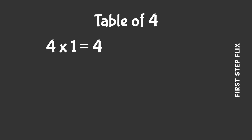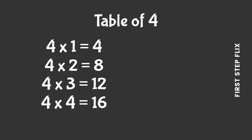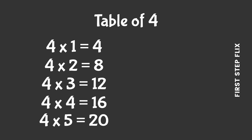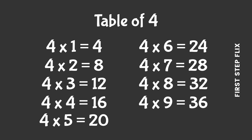Let's repeat. 4 ones are 4, 4 twos are 8, 4 threes are 12, 4 fours are 16, 4 fives are 20, 4 sixes are 24, 4 sevens are 28, 4 eights are 32, 4 nines are 36, 4 tens are 40.